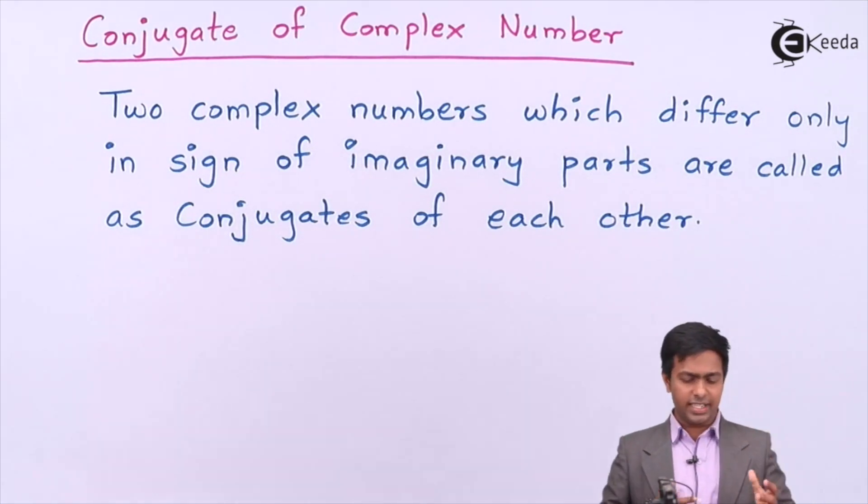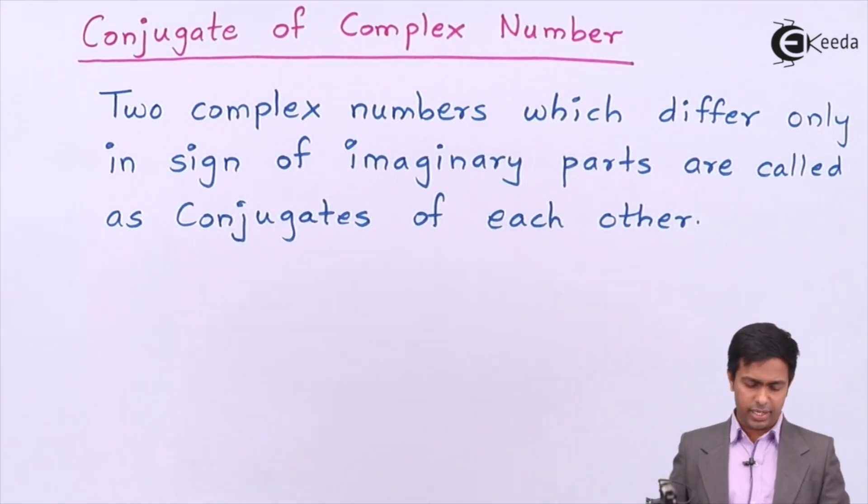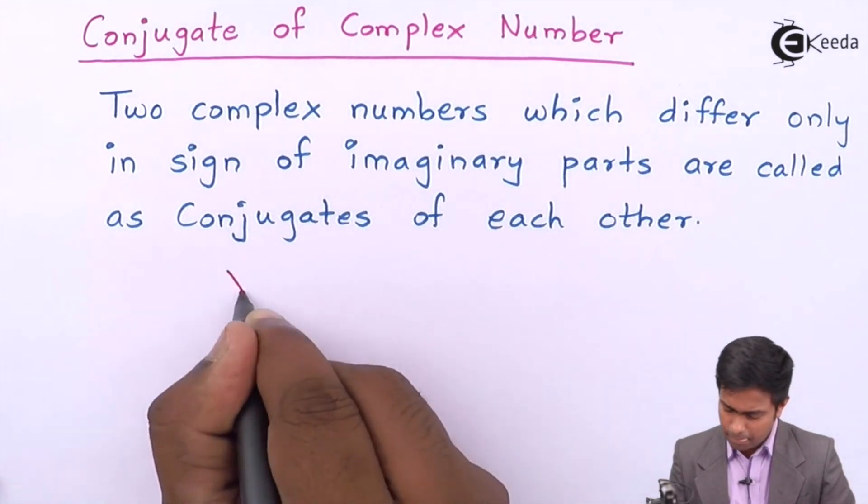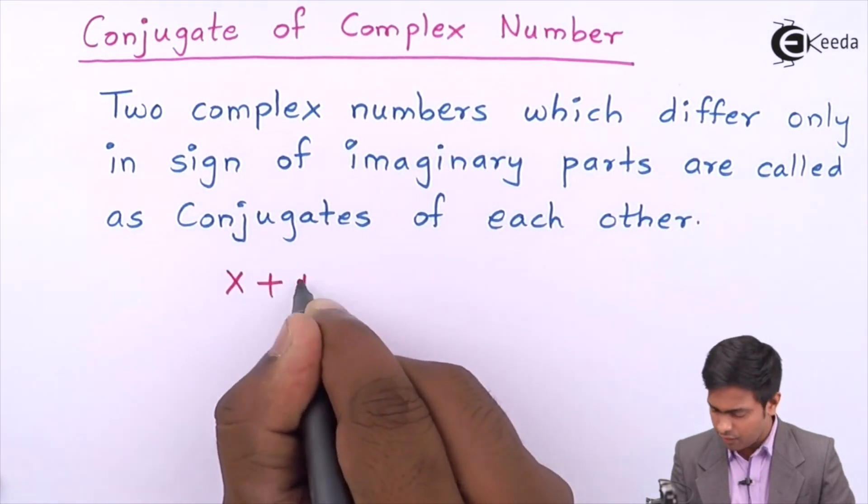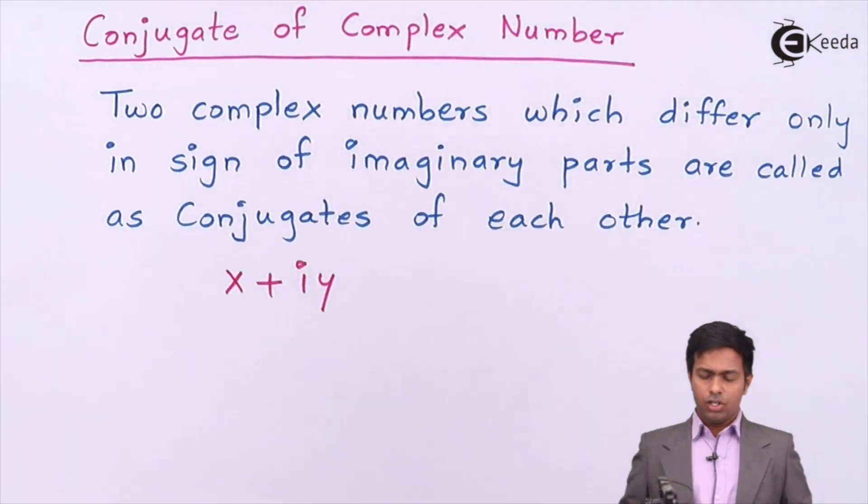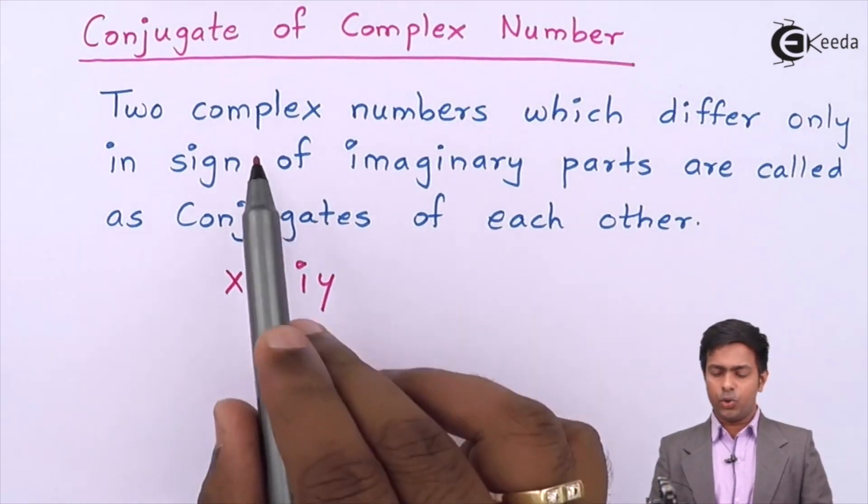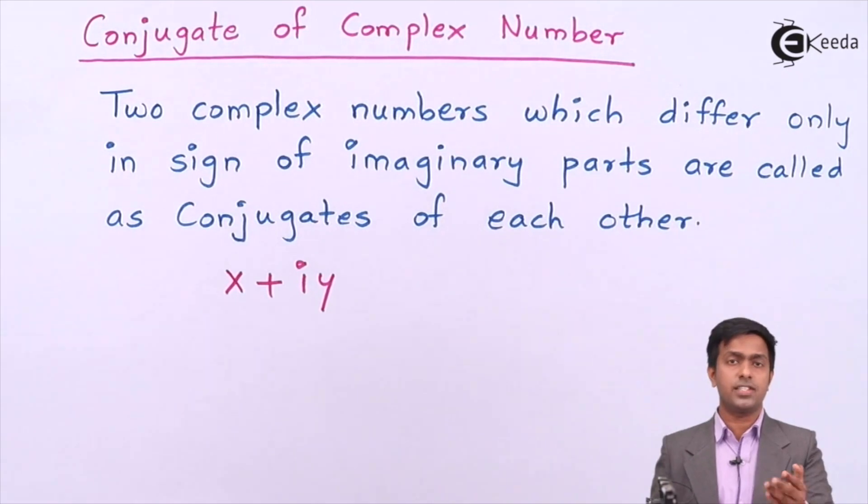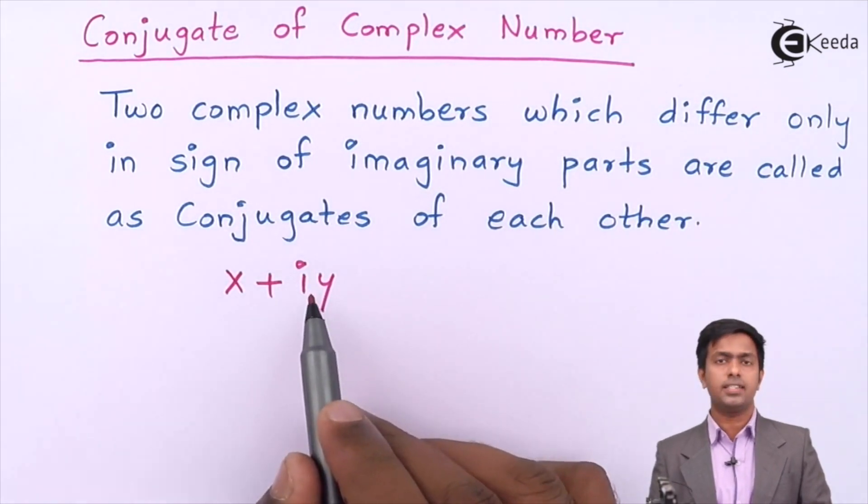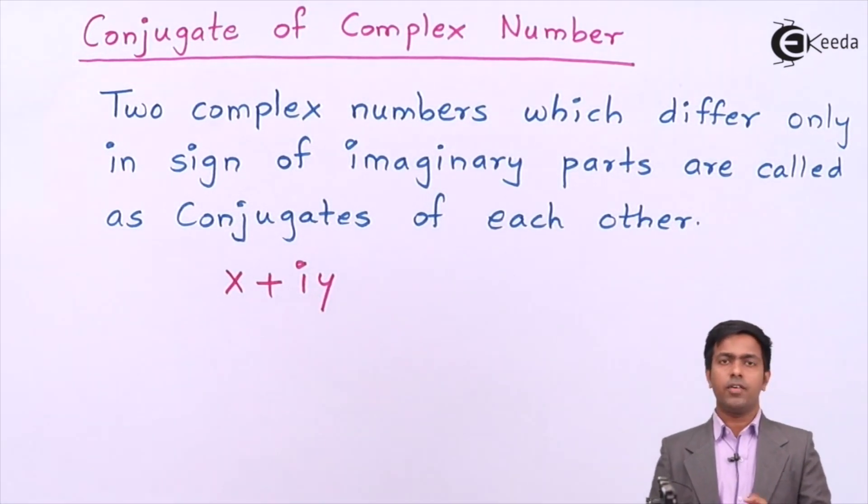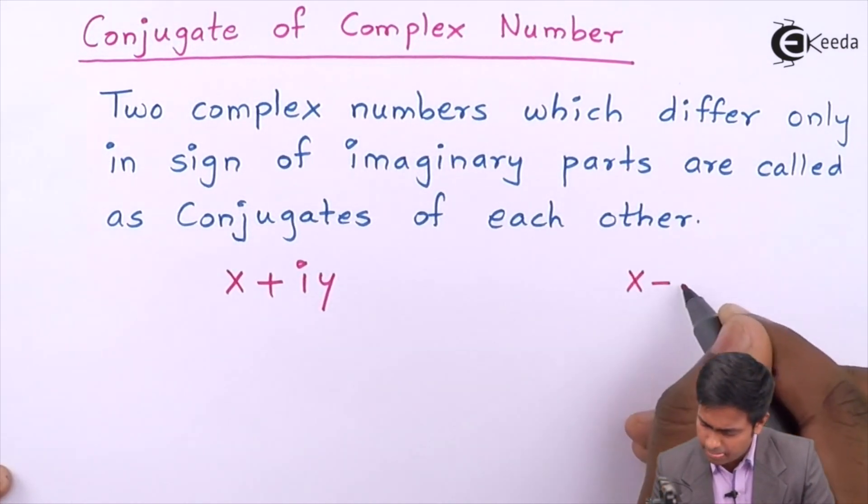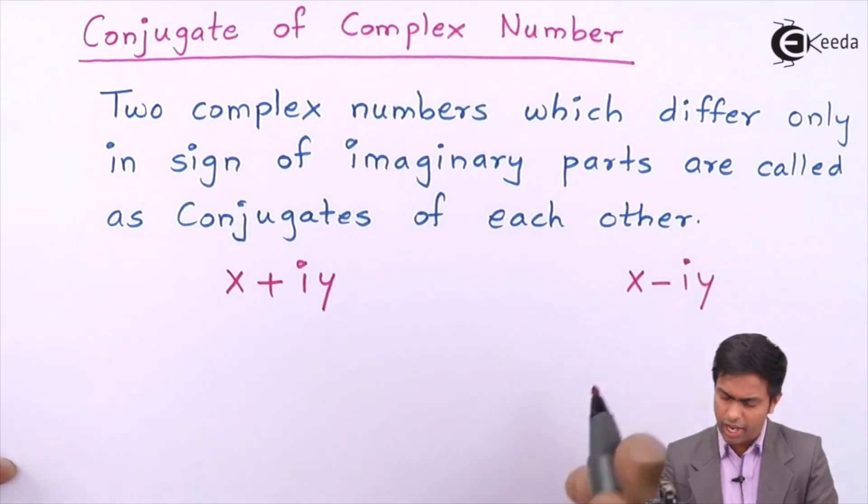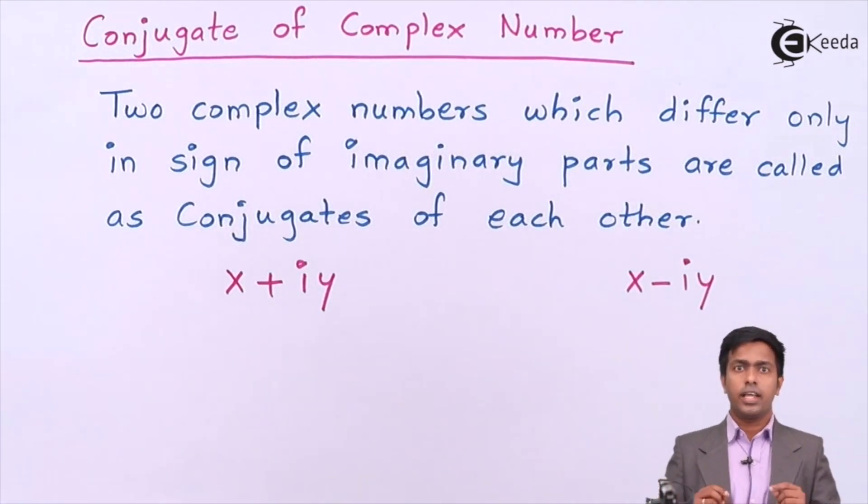What we have to consider: two complex numbers. Let's say the first complex number is x + iy. It is said that two complex numbers which differ only in the sign of imaginary part. Here the imaginary part is iy. If sign is positive, the other number's sign must be negative, so x - iy. Can you observe that the sign of imaginary part is different?